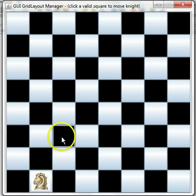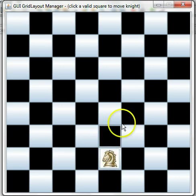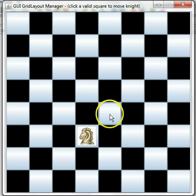If you click a valid move, you can move the knight. And to follow the L patterns, you can move the knight around. If you click an invalid square, the knight will not move.